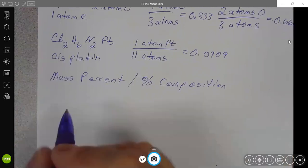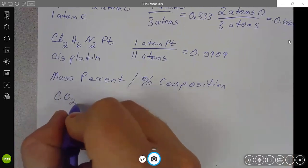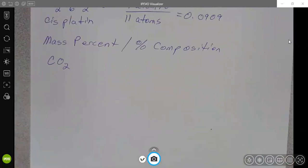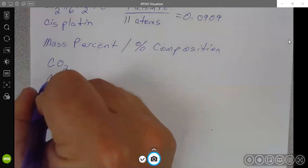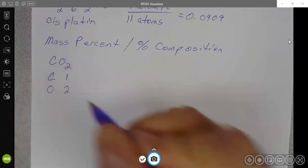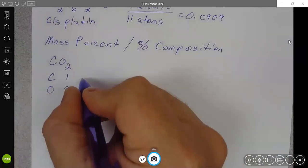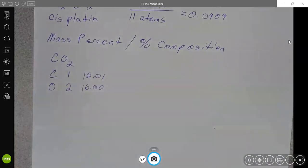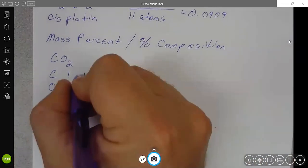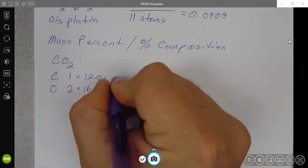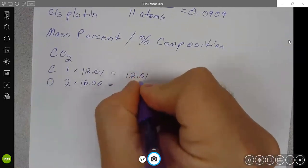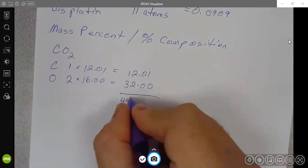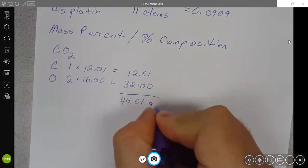And with carbon dioxide or with cisplatin, we're always going to start this off like we're finding the molar mass or the molecular mass where we list the atoms in the compound. We list how many are there. We give the average atomic masses of the elements we multiply across. And we add down. So we're always going to start off this way.